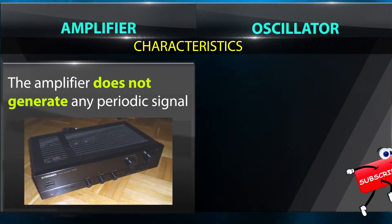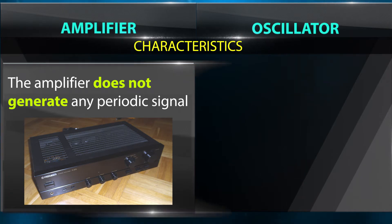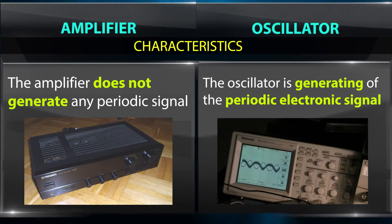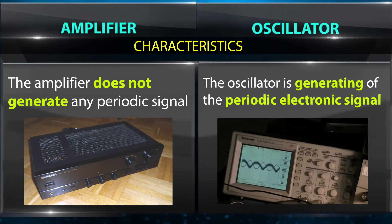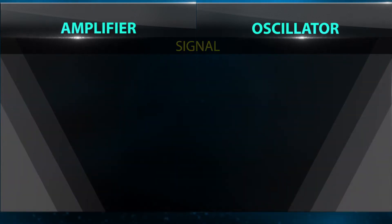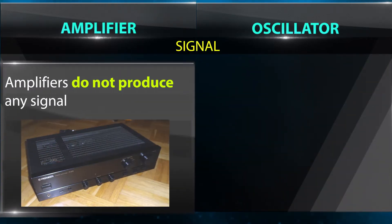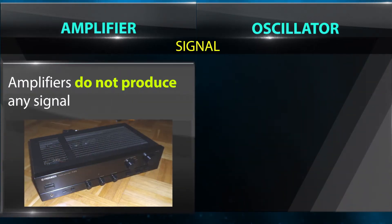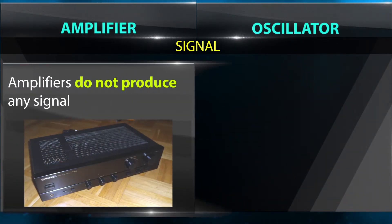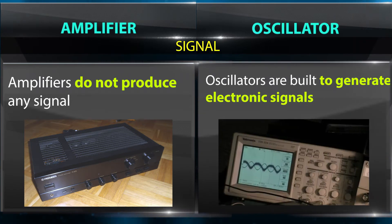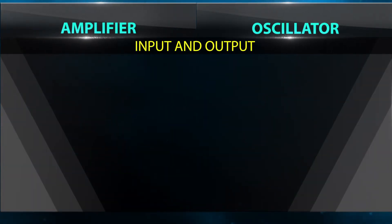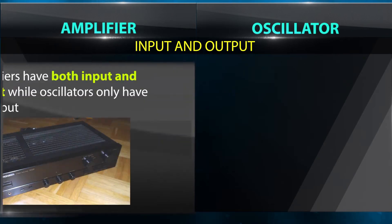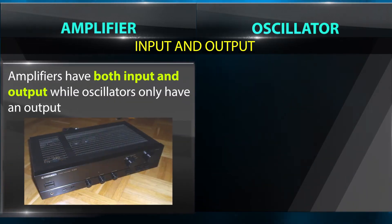Characteristics: the amplifier does not generate any periodic signal, whereas the oscillator generates a periodic electronic signal. Regarding signal: amplifiers do not produce any signal on their own, while oscillators are built to generate electronic signals.